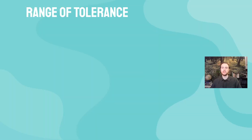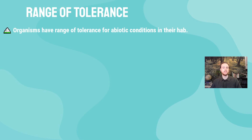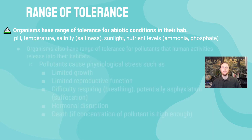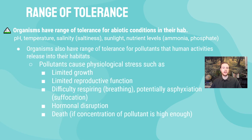The first topic we'll talk about is range of tolerance. All organisms have a range of tolerance for the conditions of their habitat or ecosystem, and today we'll focus on how human actions can shift those conditions outside that range. This includes abiotic factors like pH, temperature, salinity, sunlight, and nutrient levels, and organisms also have a range of tolerance for pollutants or toxicants that humans introduce into their ecosystems.